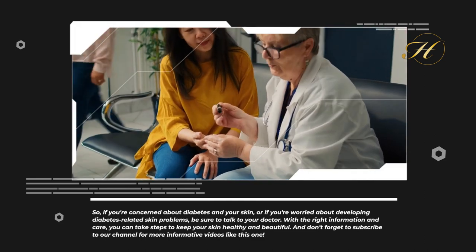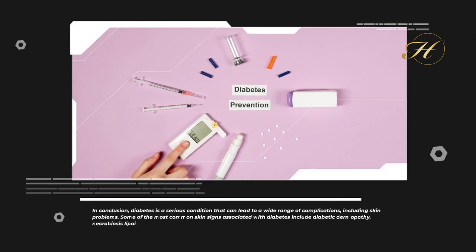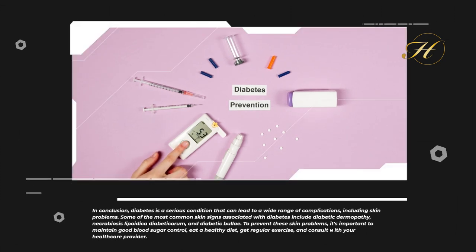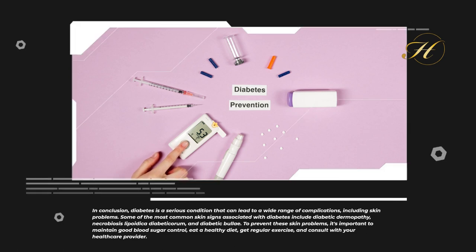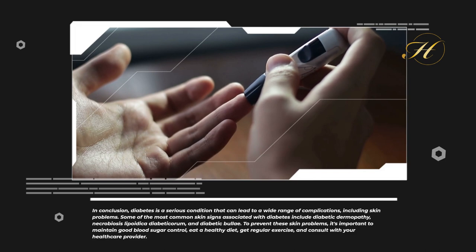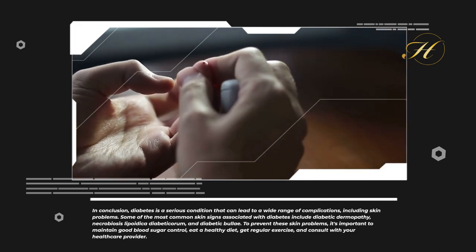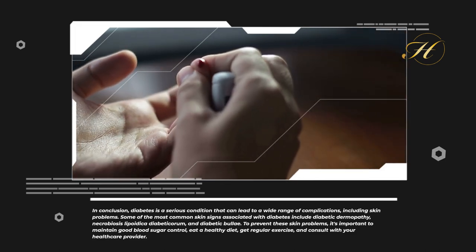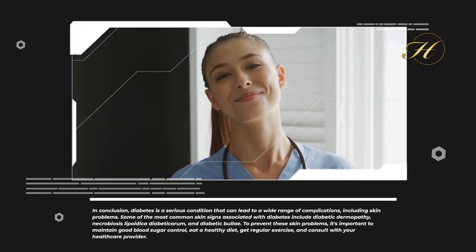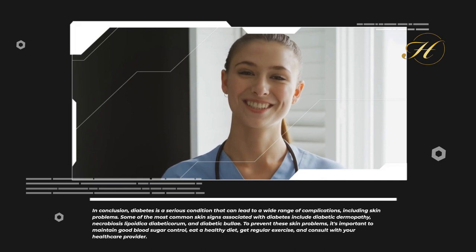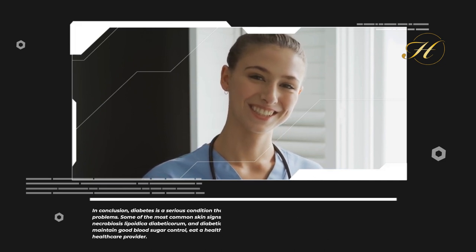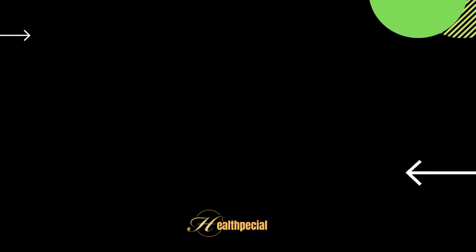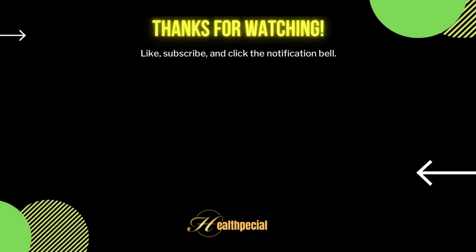Don't forget to subscribe to our channel for more informative videos like this one. In conclusion, diabetes is a serious condition that can lead to a wide range of complications, including skin problems. Some of the most common skin signs associated with diabetes include diabetic dermopathy, necrobiosis lipoidica diabeticorum, and diabetic bullae. To prevent these skin problems, it's important to maintain good blood sugar control, eat a healthy diet, get regular exercise, and consult with your healthcare provider. For more information, visit www.fema.org.